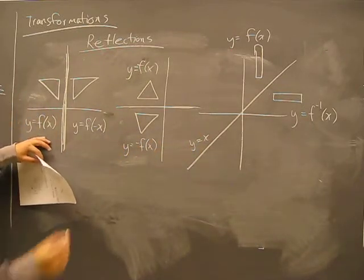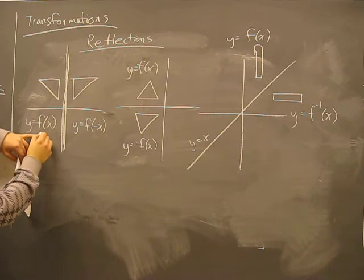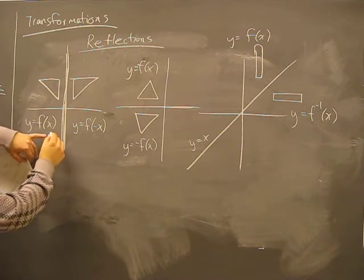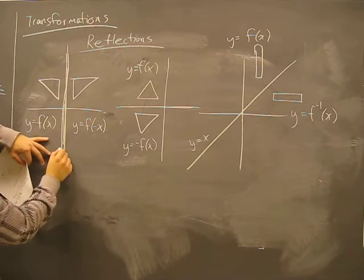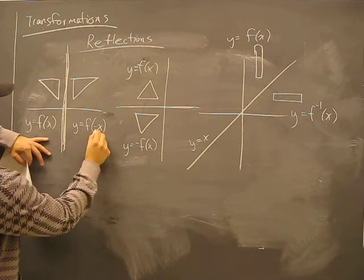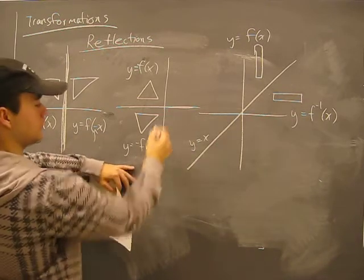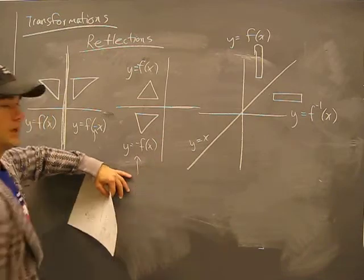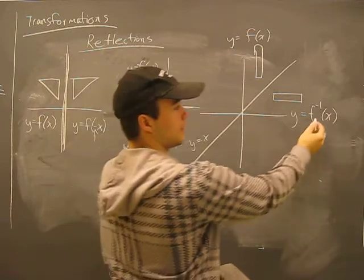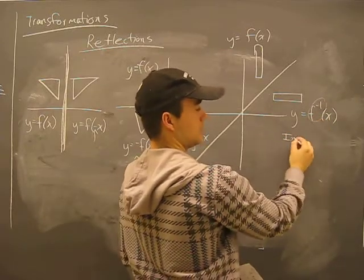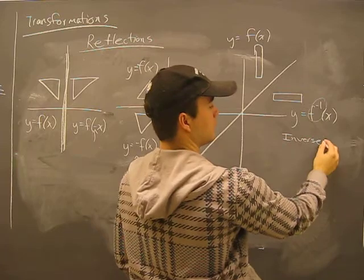What I have here is the initial function. A reflection over the y-axis, that's the negative sign. A reflection over the x-axis, this is where the negative sign goes. And reflection over the y equals x, this means inverse. It's inverse function.